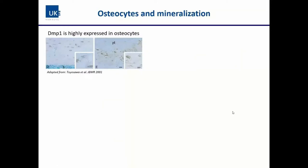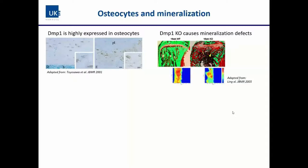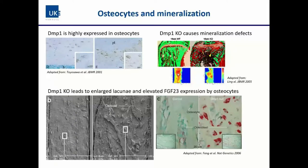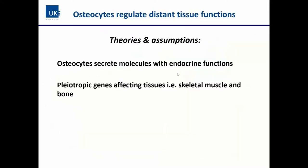Regarding peri-lacunar remodeling and bone formation: osteocytes clearly contribute to bone matrix mineralization. Osteocytes express large amounts of DMP1 as seen in immunohistochemical images, and when DMP1 is knocked out there is a significant mineralization defect in bone. Stainings show less mineralized bone — with the red indicating undermineralized bone and green indicating mineralized bone matrix — particularly pronounced around the osteocyte and osteocyte lacuna. The DMP1 knockout leads to enlarged lacunae but also to elevated levels of FGF23 expressed by osteocytes.